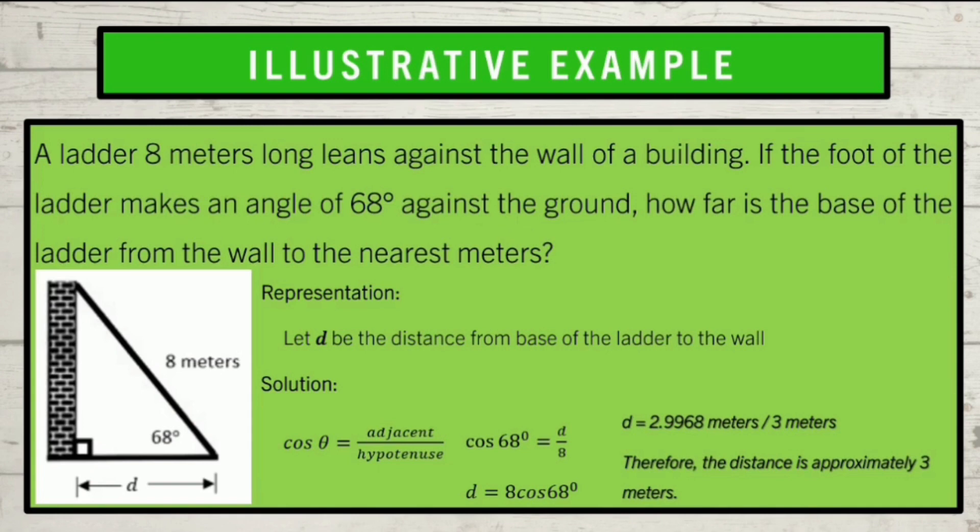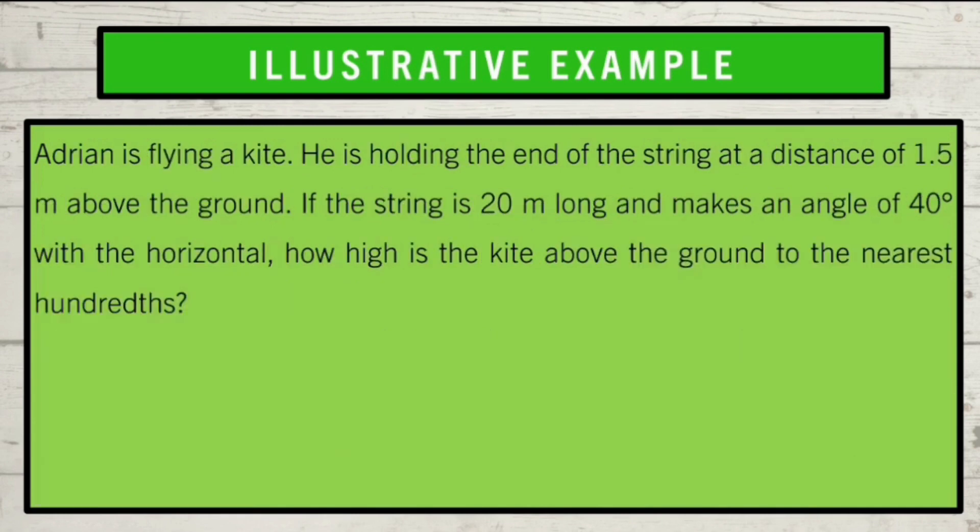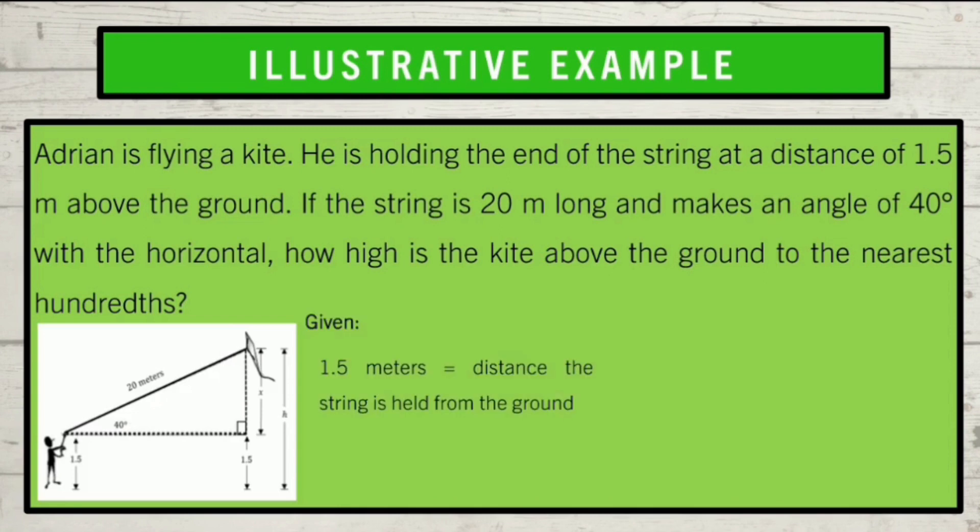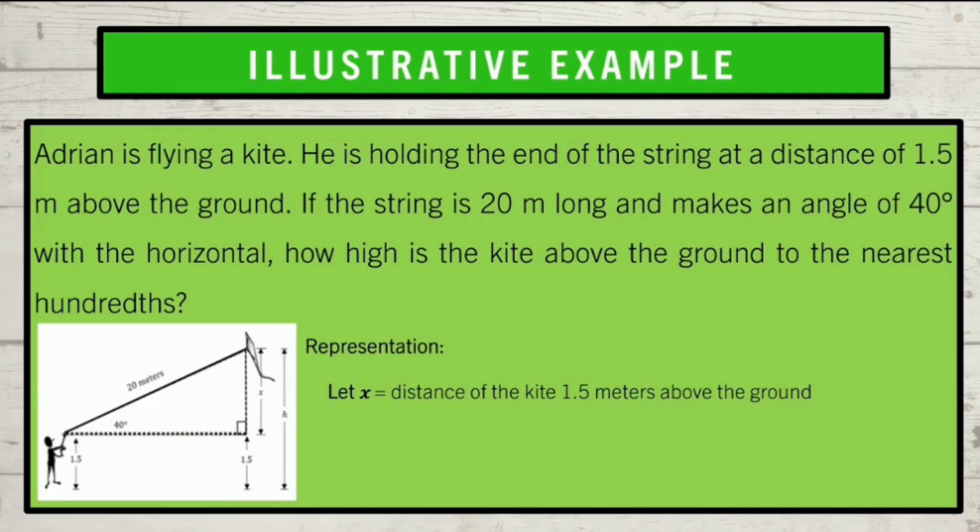Let us now proceed to problem number 2. Adrian is flying a kite. He is holding the end of the string at the distance of 1.5 meters above the ground. If the string is 20 meters long and makes an angle of 40 degrees with the horizontal, how high is the kite above the ground to the nearest hundreds? For the first step, let us look at the illustration, and we will consider the following as given: 1.5 meters is the distance the string is held from the ground, 20 meters is the length of the string of the kite, and 40 degrees is the angle formed with the horizontal and the string. What is asked is how high is the kite above the ground. But, we must first look for the value of x, which is representing the height of the kite from where it is held. Let h be the height of the kite from the ground, which is x plus 1.5.